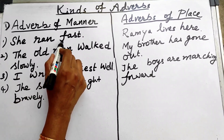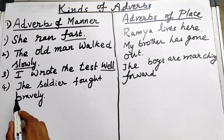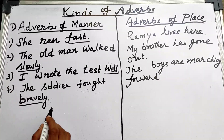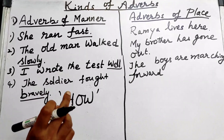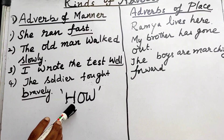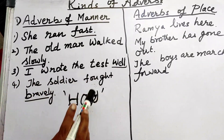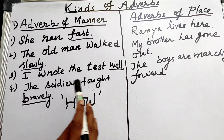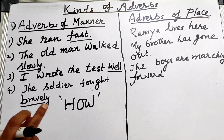These are adverbs of manner: 'fast,' 'slowly,' 'well,' 'bravely.' The adverb of manner describes the answer for the question 'how.' How did the girl run? Fast. How did the old man walk? Slowly. How did you write the test? Well. How did the soldier fight? Bravely. So a word in the sentence which gives the answer for the question 'how' is called an adverb of manner.